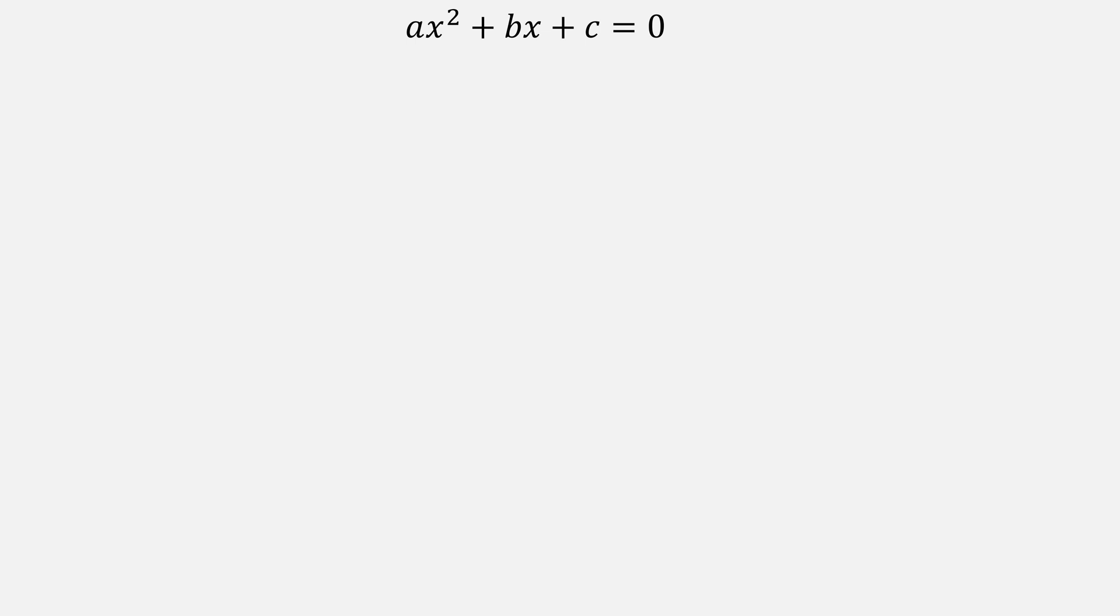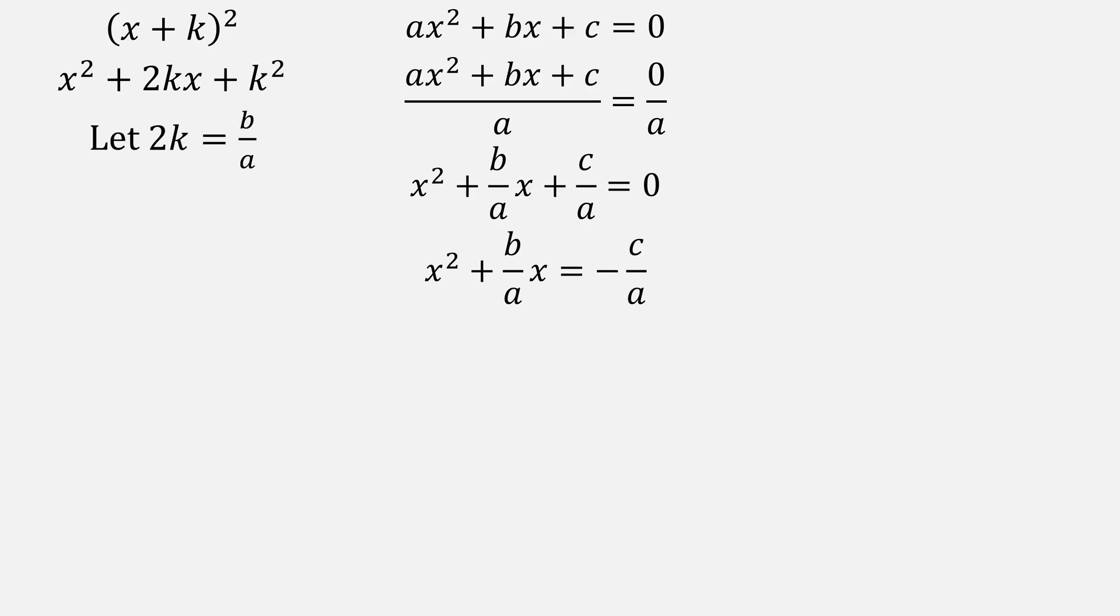To solve an equation like this directly, the first thing you do is divide by the leading coefficient a, giving you this form, and then move that c over a term to the right side. If we only had one root, we could write our equation as the quantity x plus k squared. When expanded, it would be x squared plus 2kx plus k squared. If we let 2k be b over a, that gives us k as b over 2a, and k squared is b squared over 4a squared.